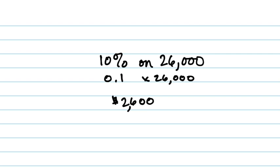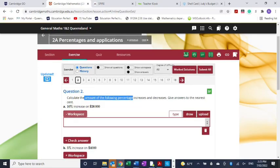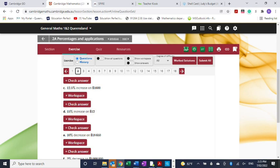A student asks what the new price would be — exactly, and that's going to be the next set. Now you're going to do one to practice pushing these into your calculator. Just do C: 12.5% increase on $1,600.